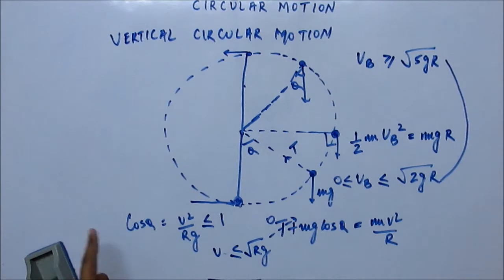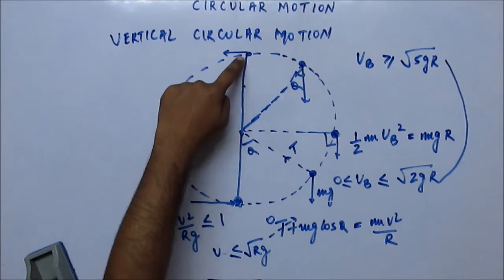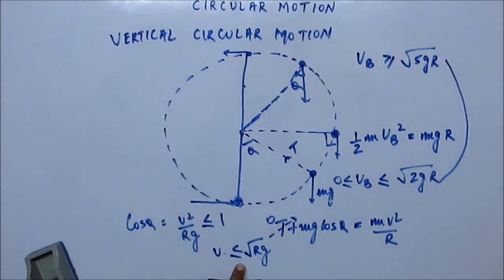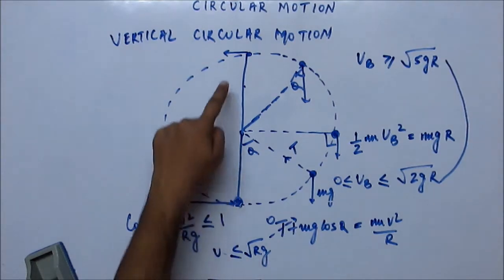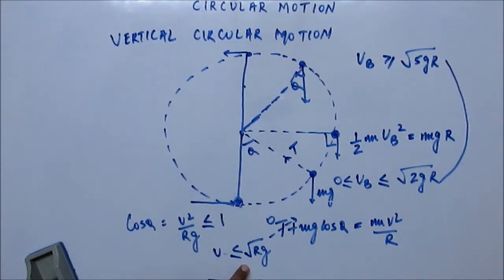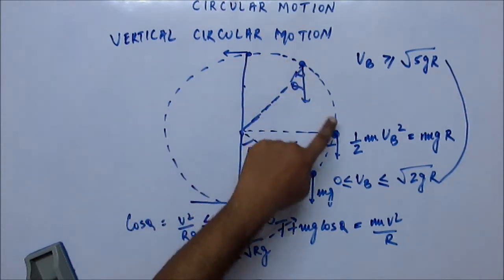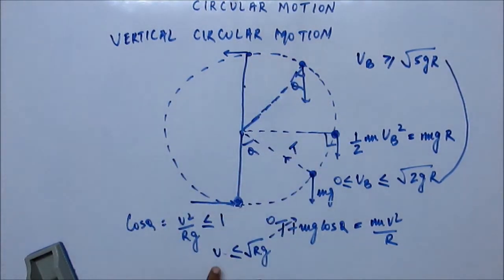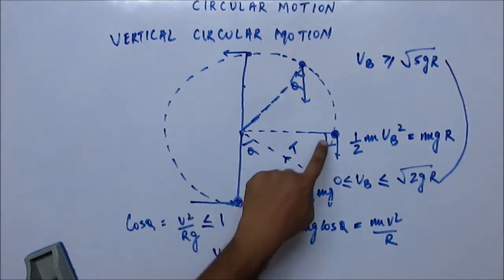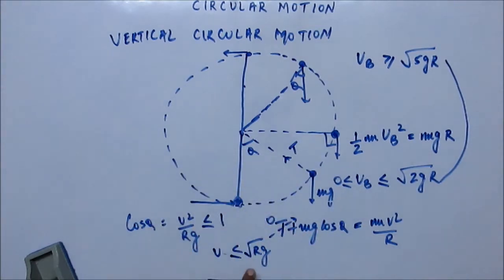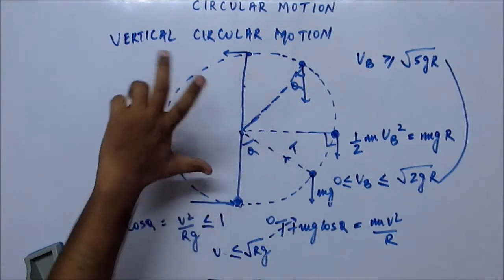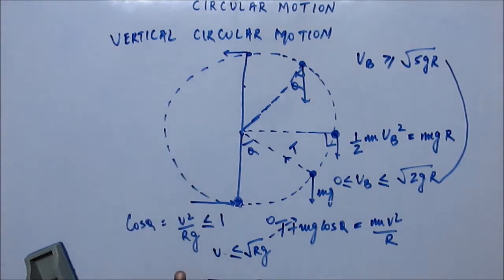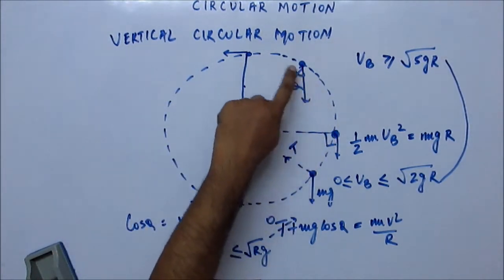Previously we calculated the value of V to be √(Rg) at the top. When velocity equals √(Rg) it reaches the top; when velocity is less than √(Rg) it will not reach the top but will reach some intermediary position. If velocity is 0 it cannot go up; if velocity is √(Rg) it completes the circle; if velocity is between 0 and √(Rg) it reaches some intermediary position.